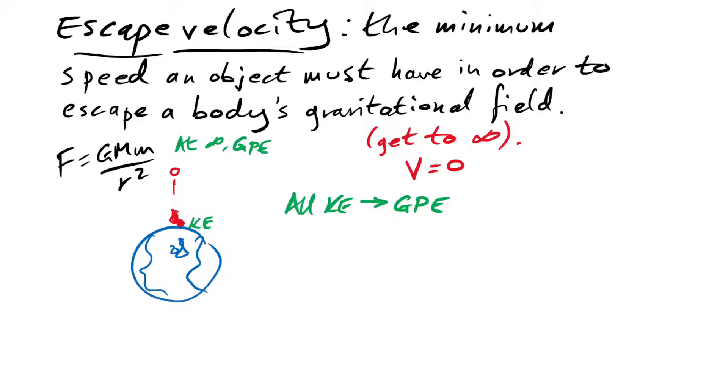If you give it a speed less than escape velocity then obviously it will come back to the Earth eventually. Might take a while but it'll come back. Give it a speed greater than the escape velocity and it will get to infinity and just keep on going. It will have more energy than it needs to overcome the gravitational pull.